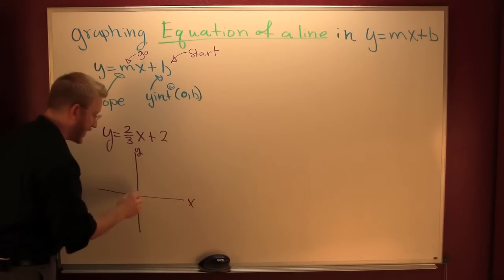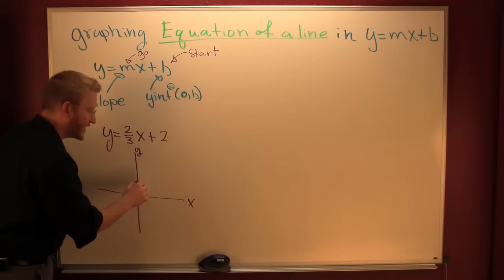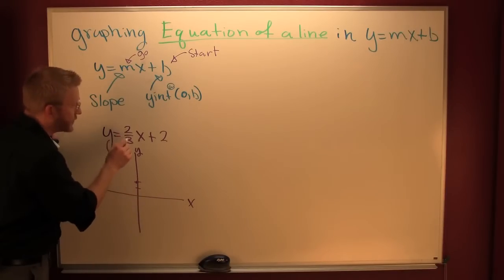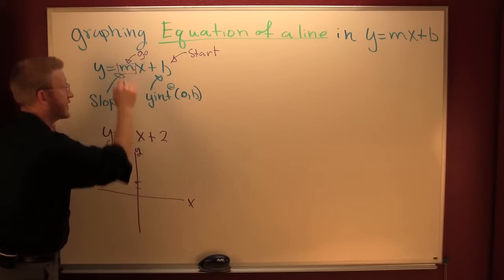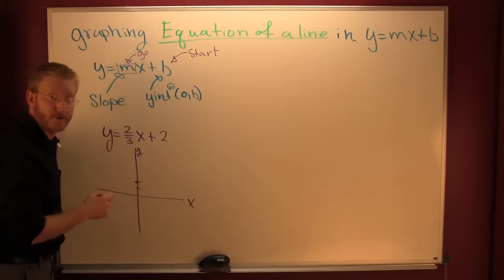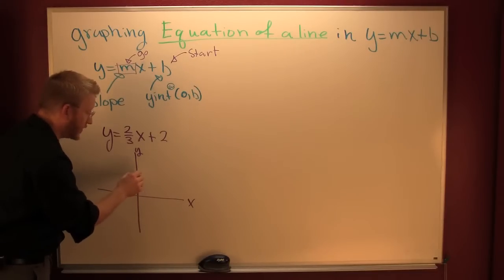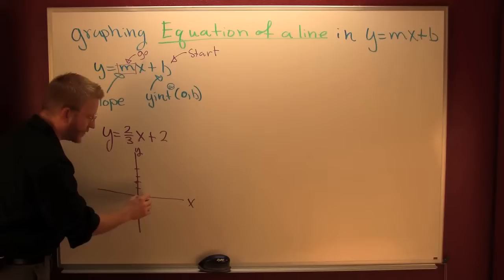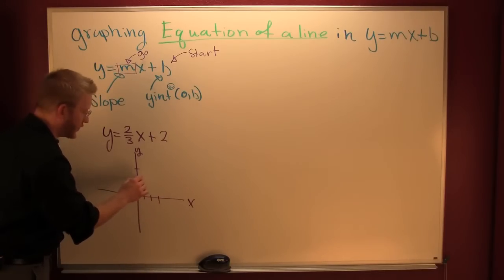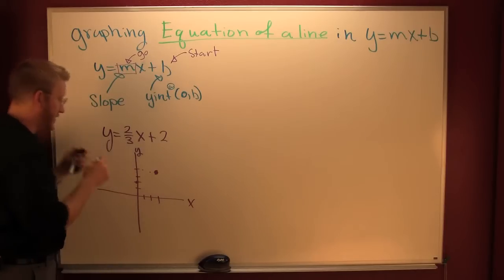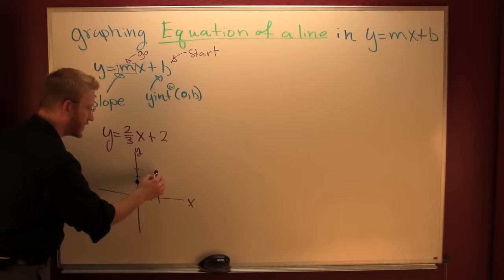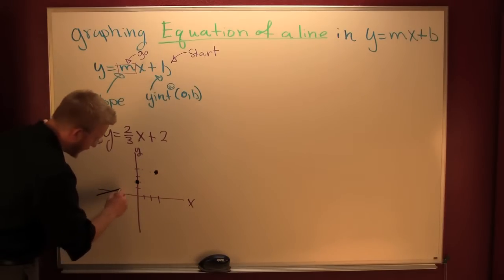So this is your y and that's your x. Count up one, two — you're going to start right there. Then where are you going to go? Up two, over three. That's your slope — the number in front of your x when it's in y equals mx plus b form. From here you go up one, two, and then right one, two, three. You put another dot. There's your y-intercept, there's your other dot, and then you connect the dots.